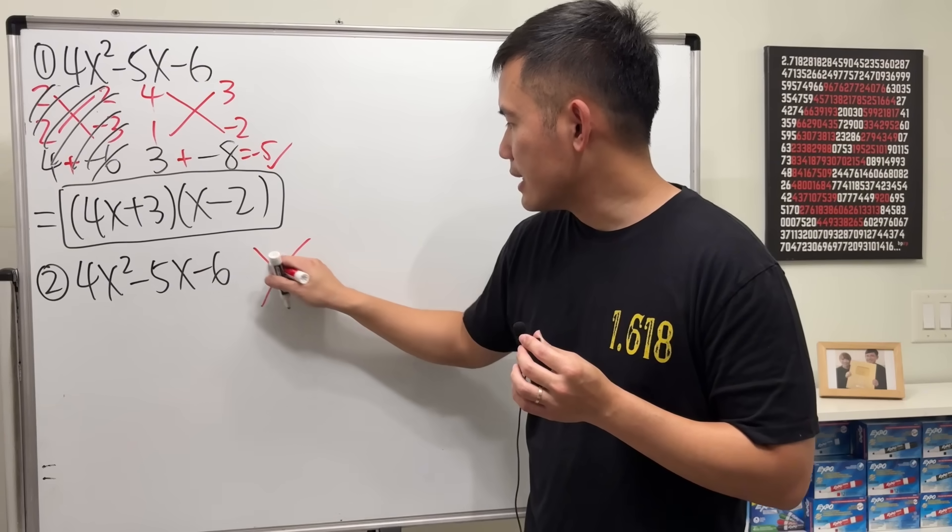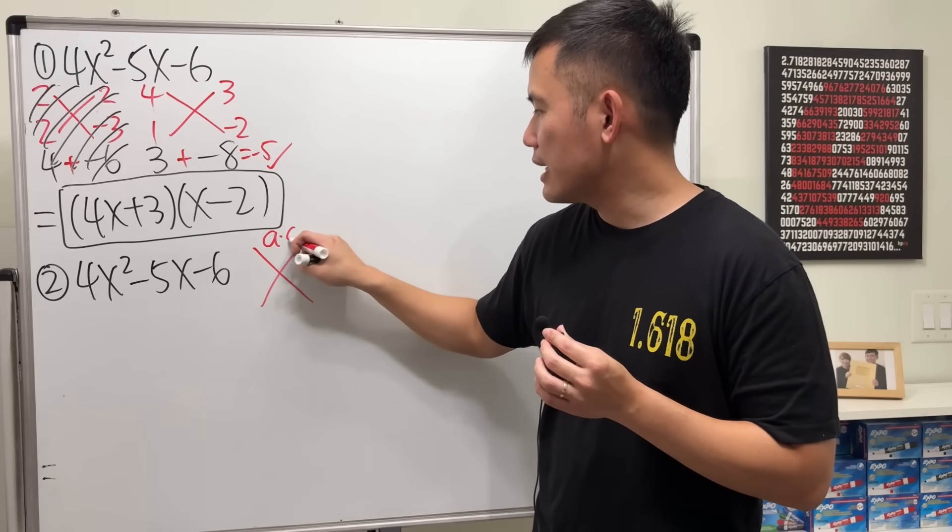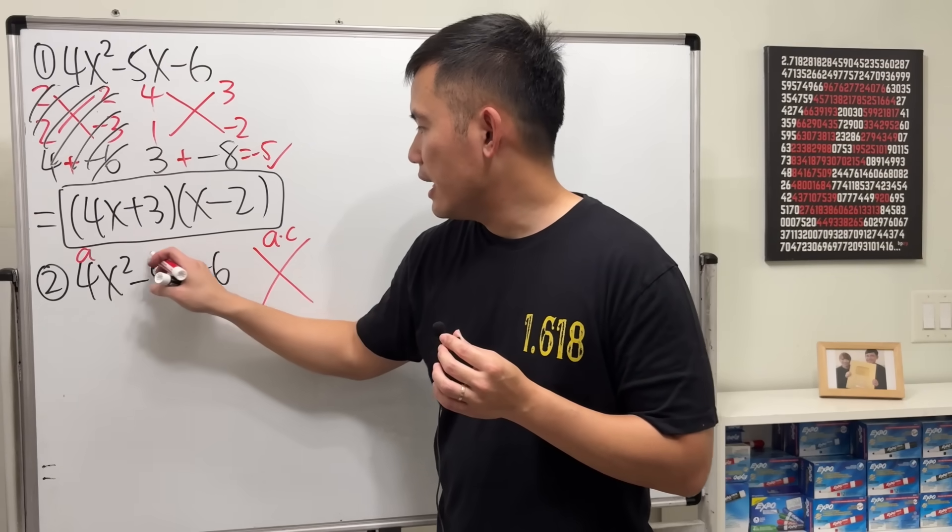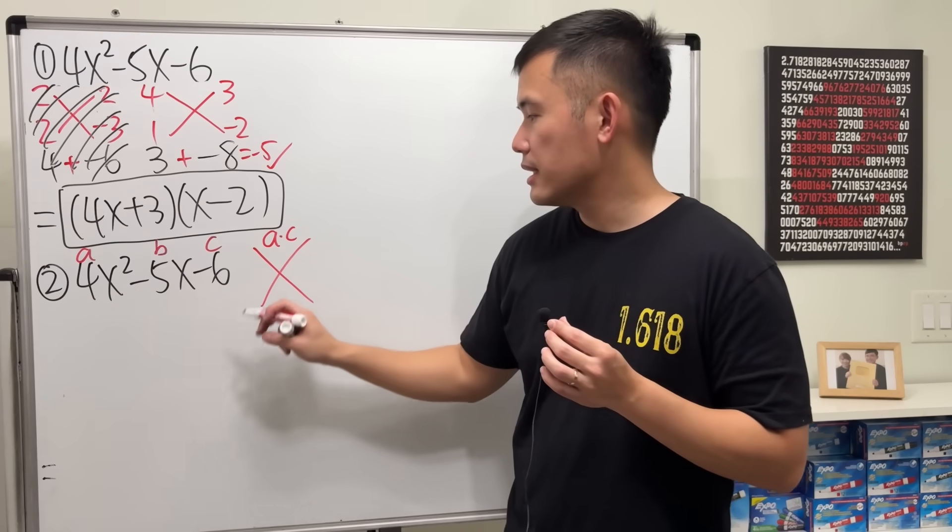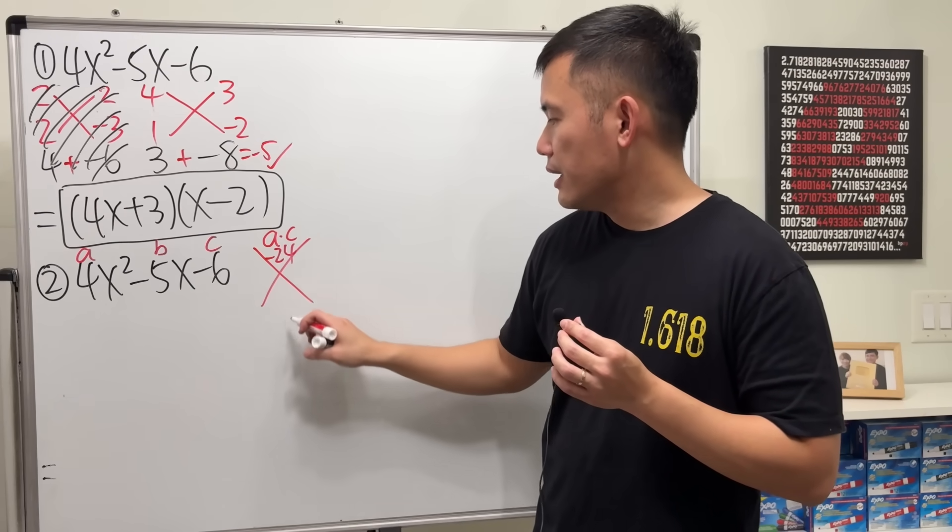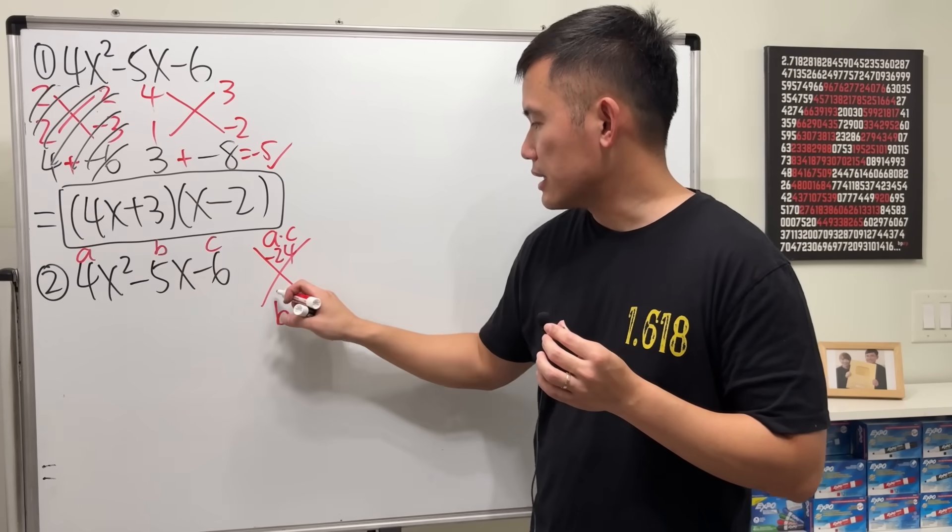So we still do the cross like this. But we have to compute A times C. This is A. This is B. This is C. So we do 4 times negative 6. That's negative 24. And then the B value is negative 5.